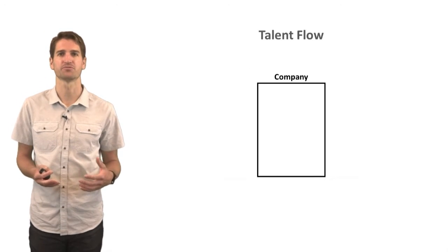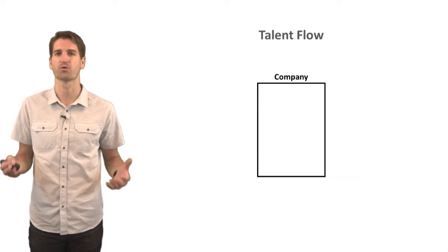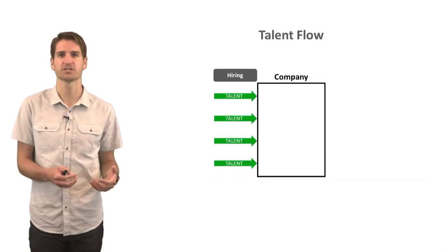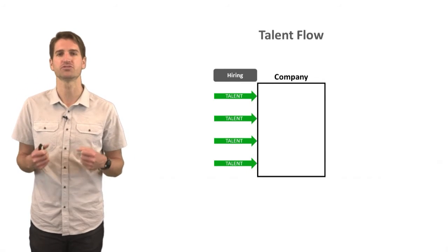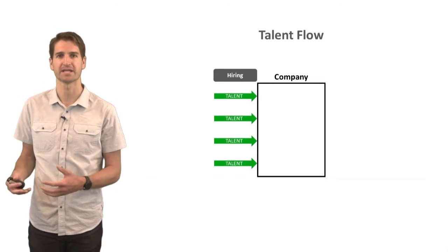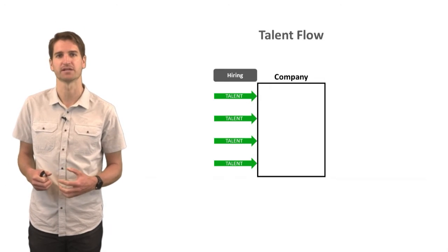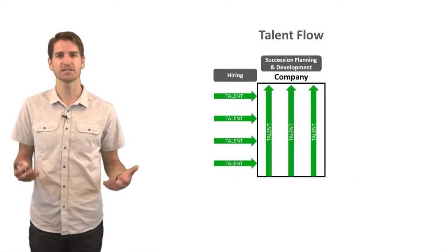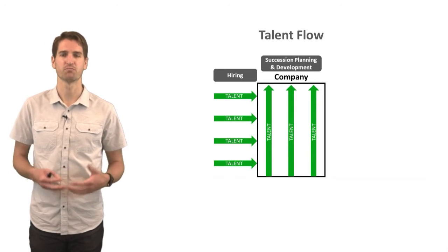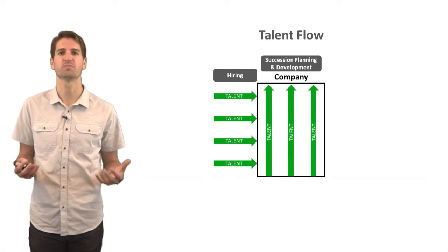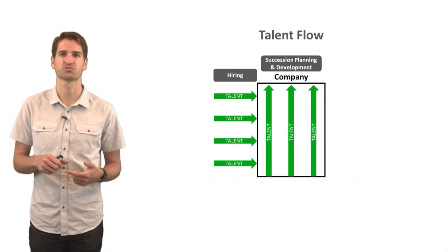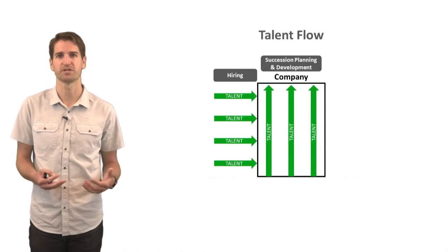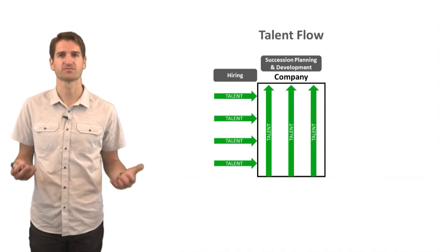We can think of talent flow like this. We have our company or organization represented here by this empty box. We're often interested in recruitment and selection to ultimately hire people into the organization to meet our labor demands. This is when talent starts flowing into our organization. Within the organization, we'll hopefully have upward mobility and upward movement of talent through promotions, employee development opportunities, career development opportunities, and effective succession planning.